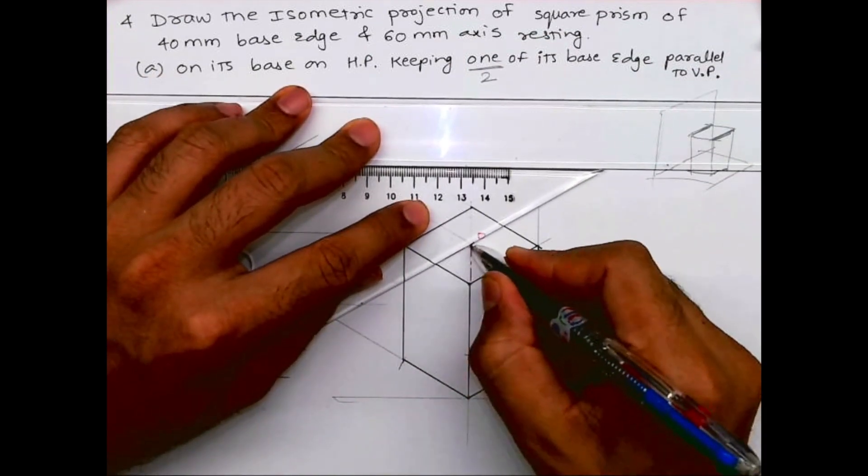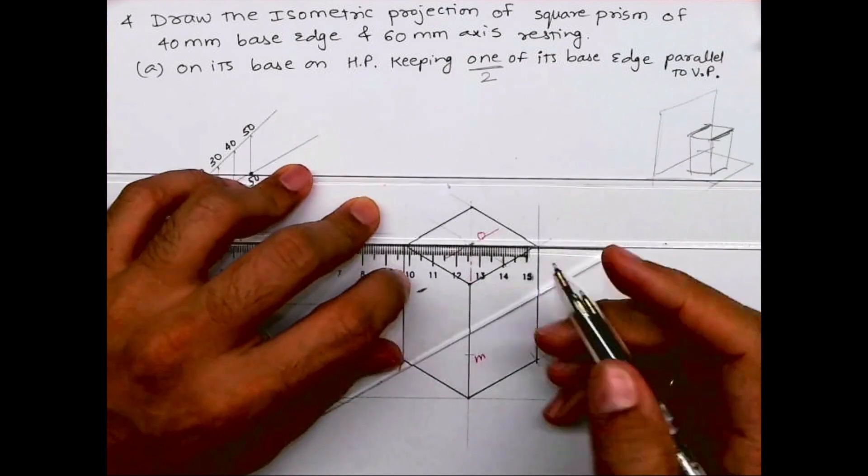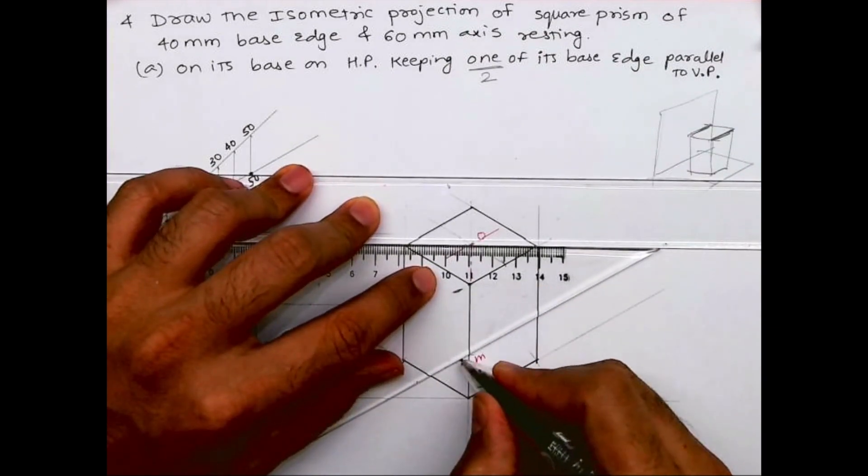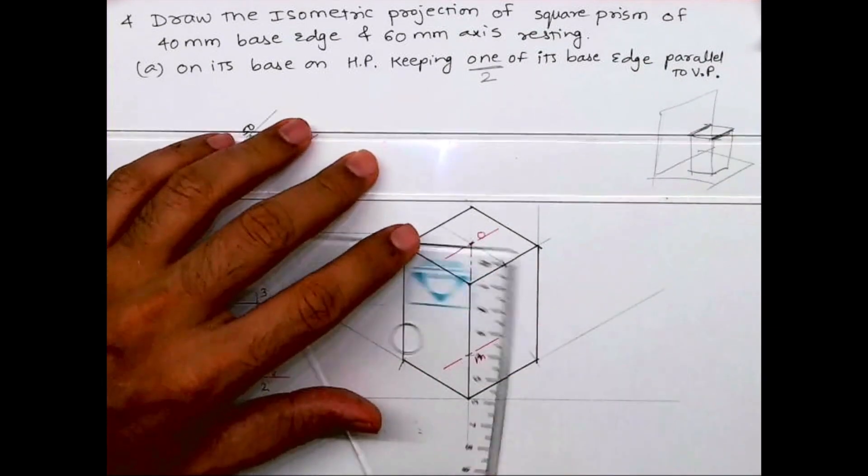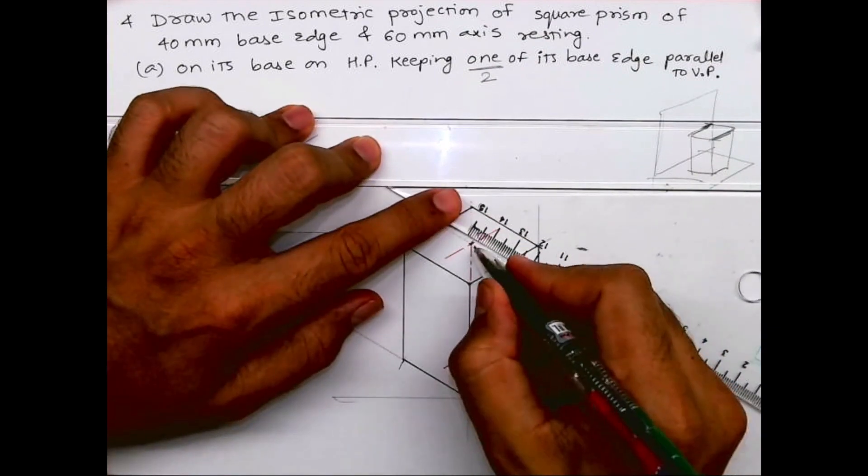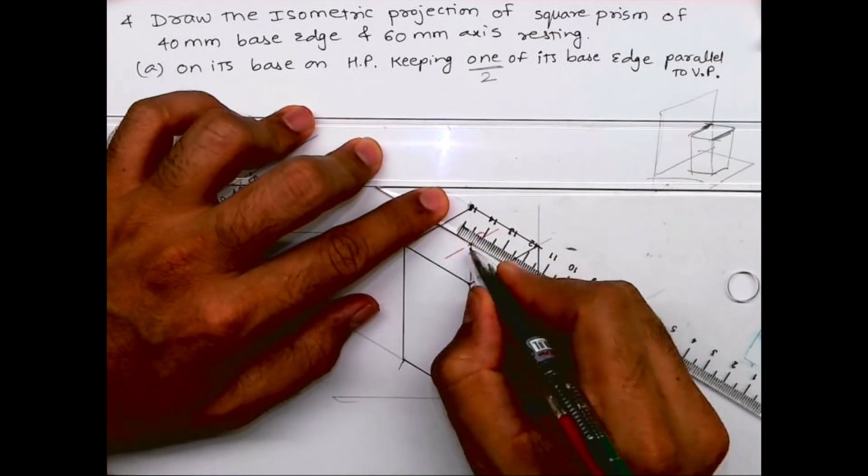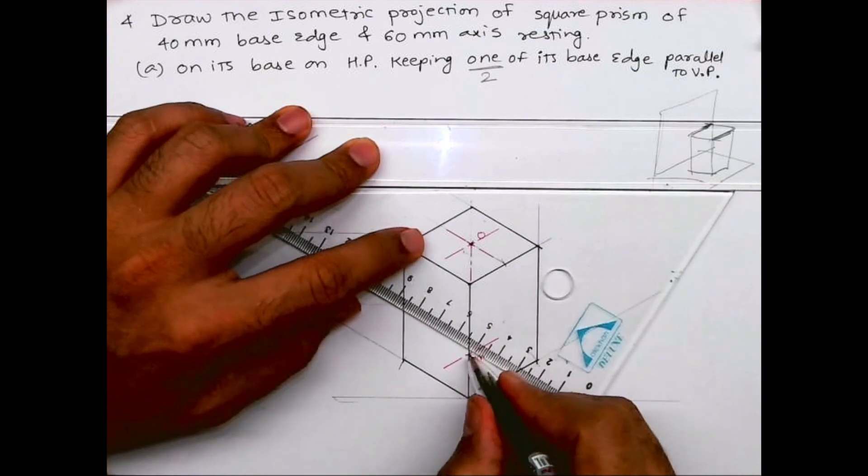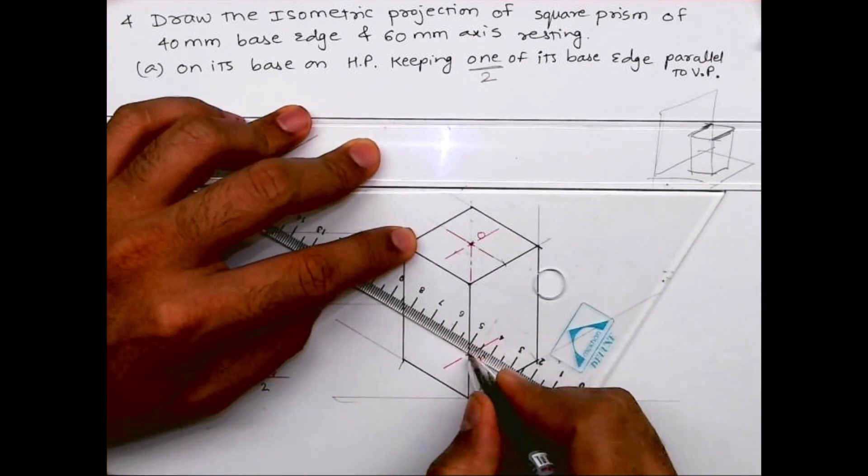So I hope you people have understood this. Now we need to draw the direction of viewing, that is X, and we need to mark O and 30 degrees as well as dimensioning. So I hope you people have understood this sum. Thank you.